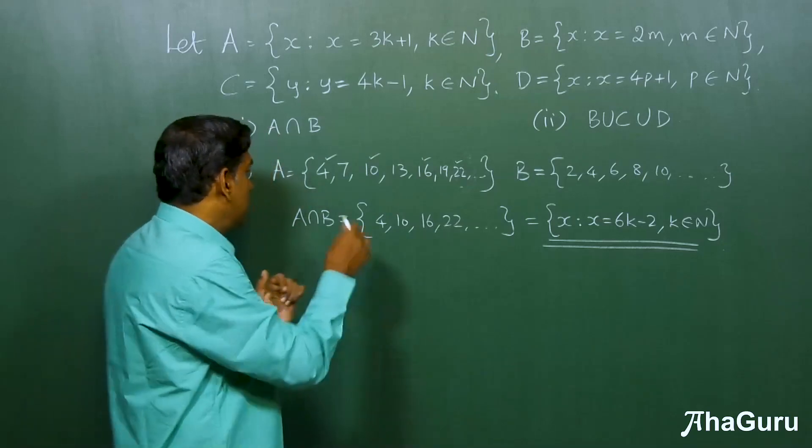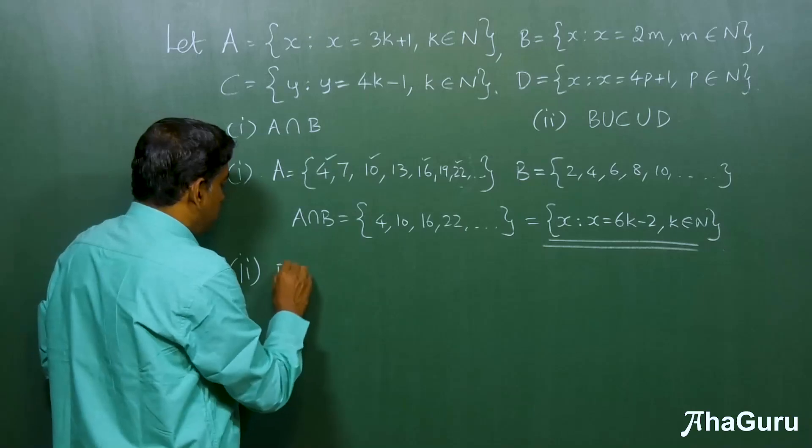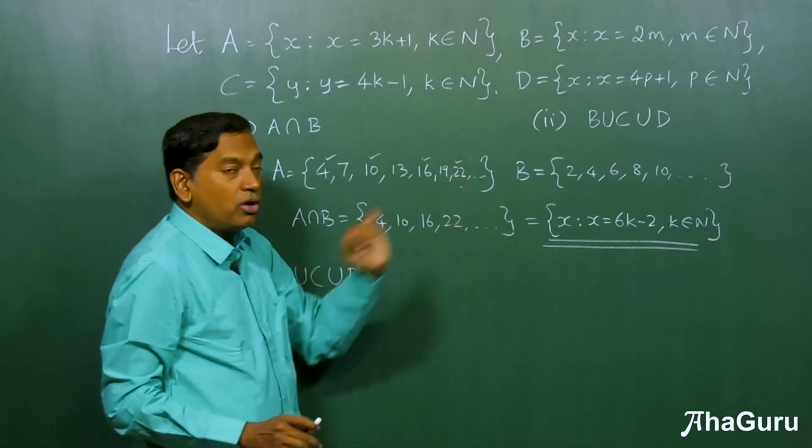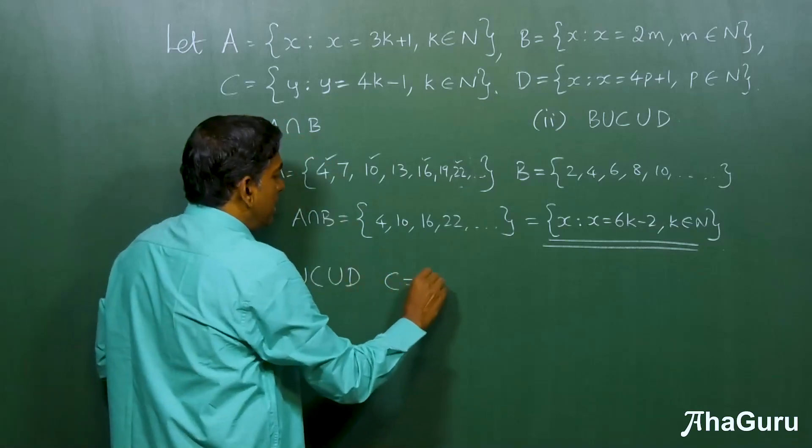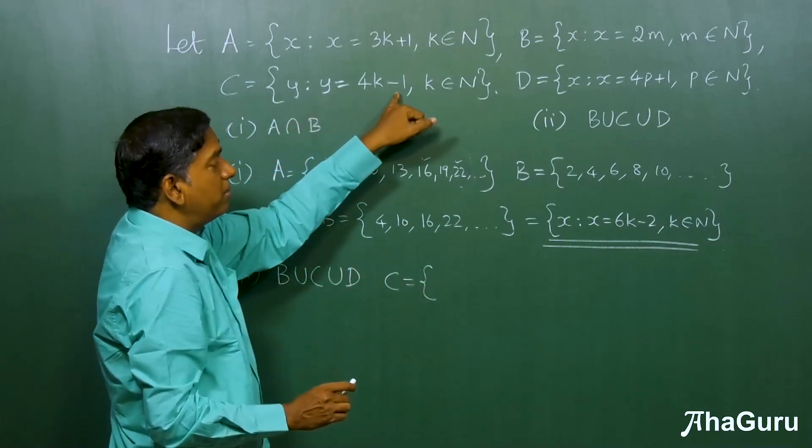Now, let's come to part 2. Part 2, the question is, what is B union C union D? B, we already know. What is C? C is the set, Y is 4k minus 1, k belongs to N.